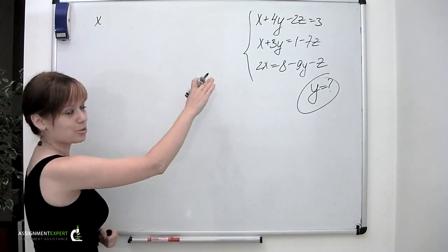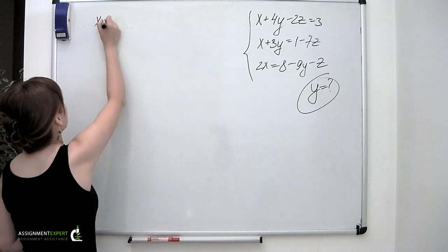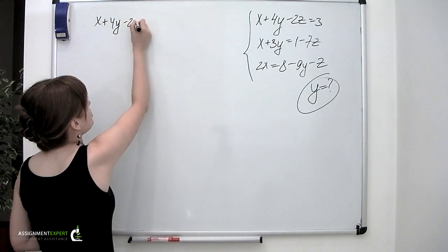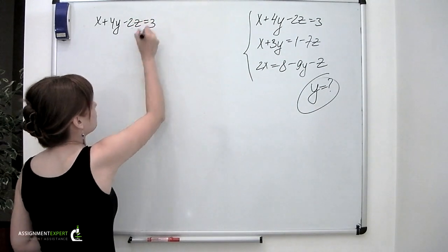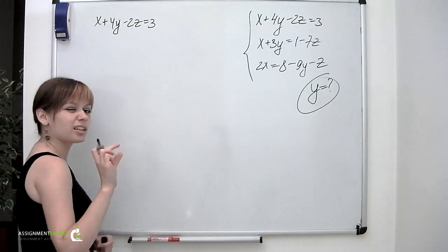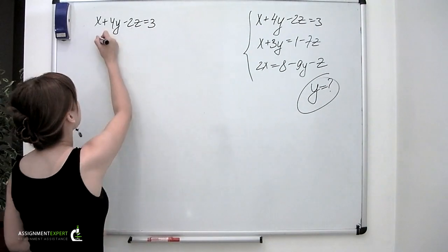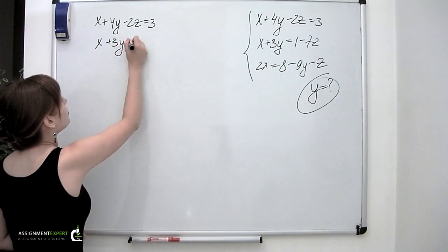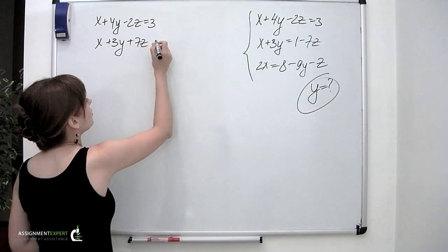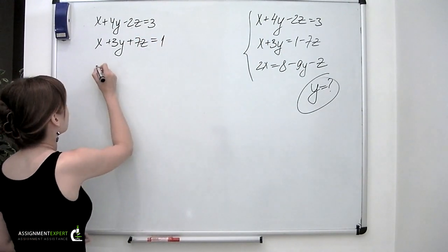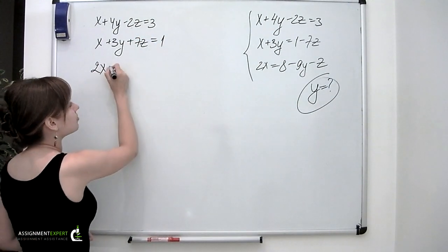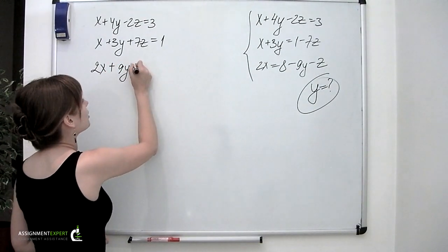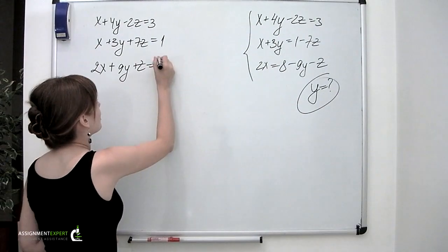The first equation stays the same: x plus 4y minus 2z equals 3. The second one: x plus 3y plus 7z equals 1. And the third: 2x plus 9y plus z equals 8.